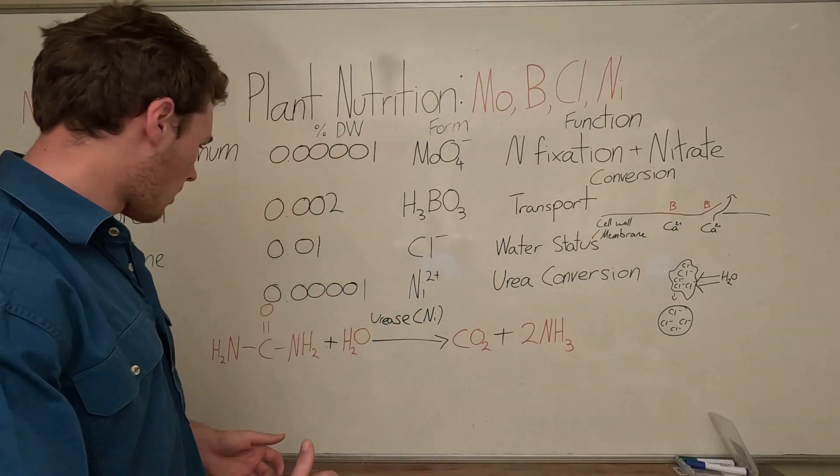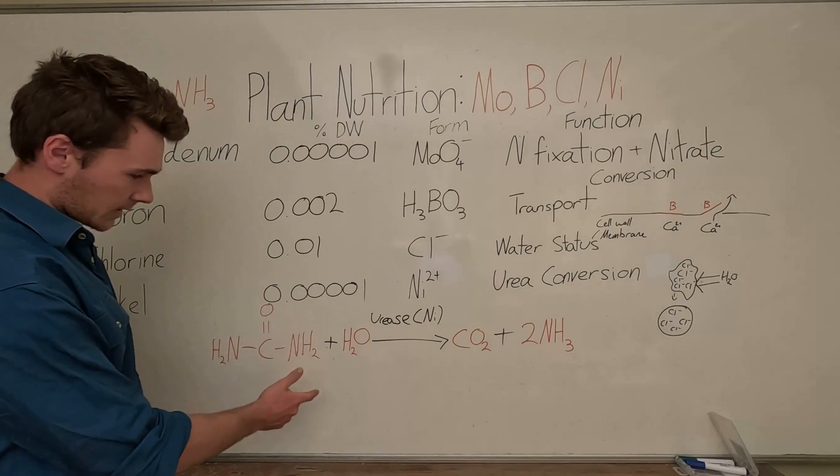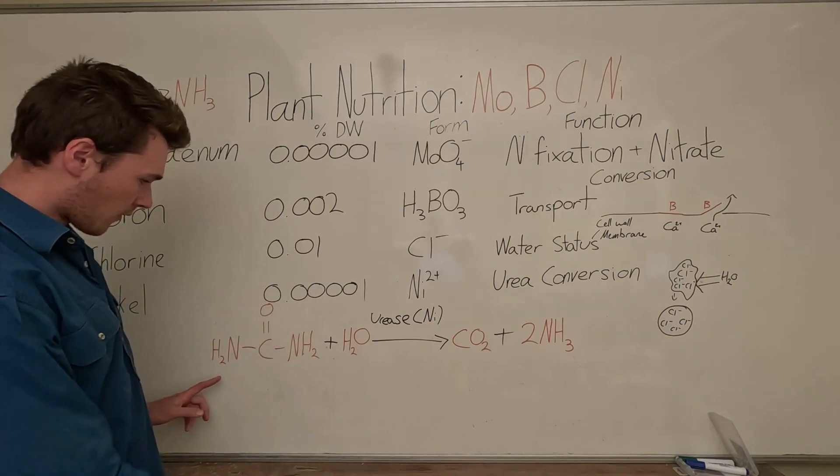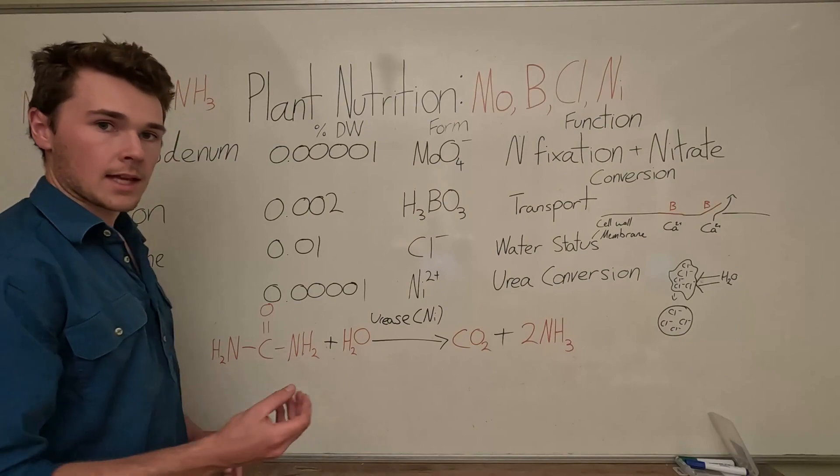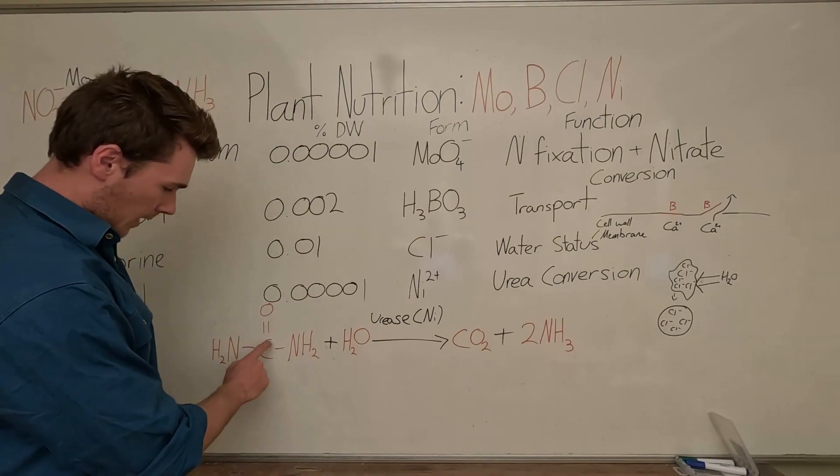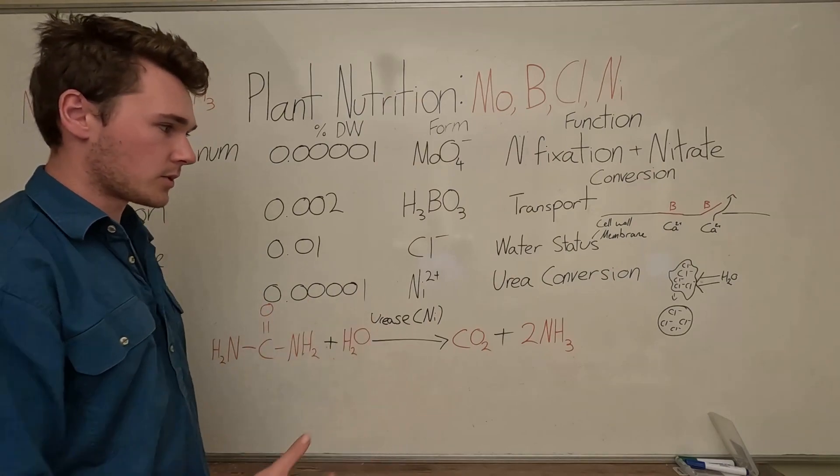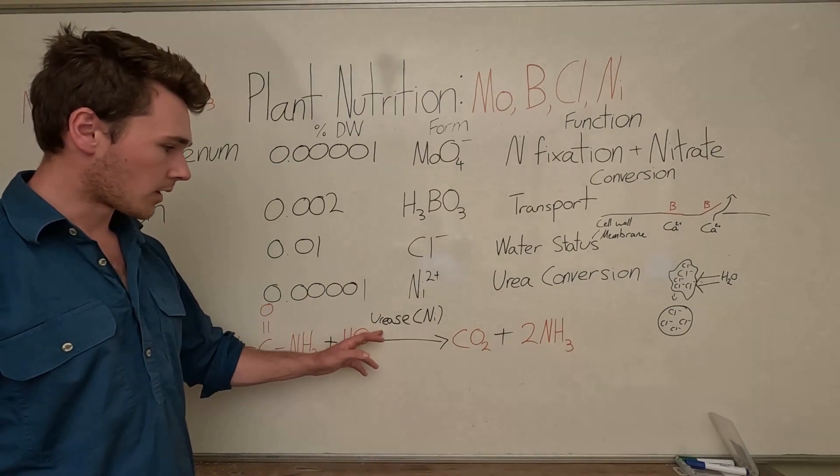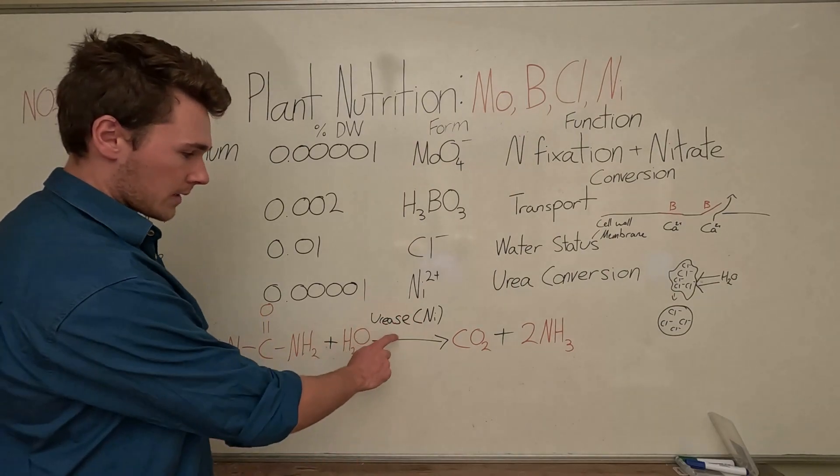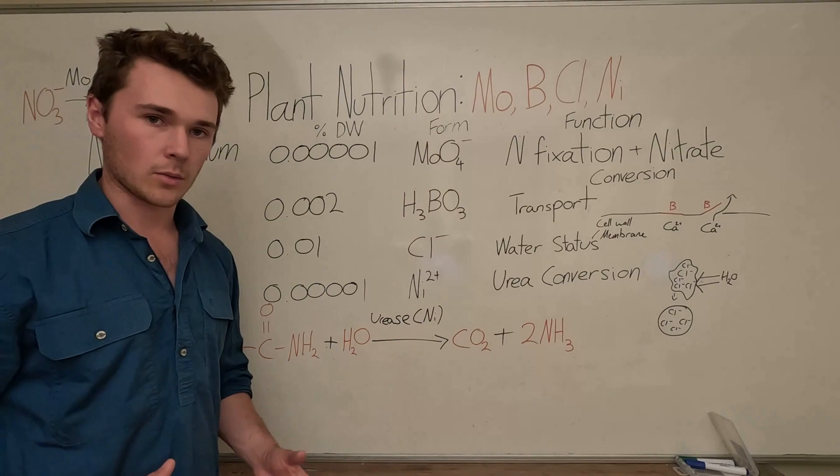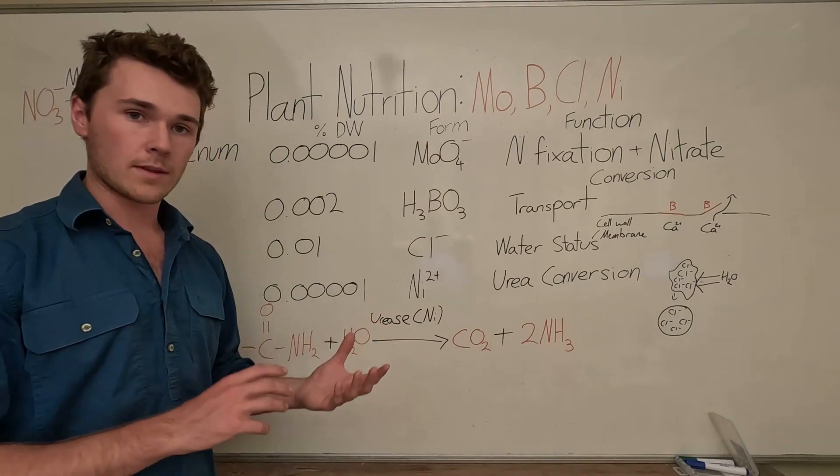When we think of urea conversion, we need to think of—this is urea here—we have basically two potential ammonium molecules attached to that, and then carbon and oxygen. So what this enzyme does, which is urease that contains our nickel, so it's very important that this enzyme has nickel, otherwise it's not going to work. So it's a cofactor. The nickel must be present with the enzyme for it to work, otherwise it doesn't work and this process does not happen.